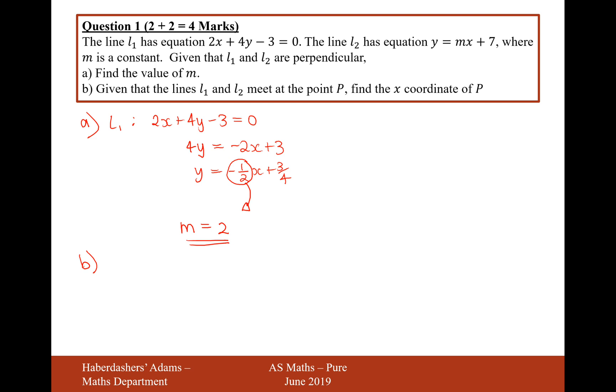Part b: Given that L1 and L2 meet at a coordinate P, find the coordinate P. Let's carry on with our equation for line 1, which is minus 1 half x plus 3 quarters, and set the other equation equal to 2x plus 7. To find the intersection of two lines, we set the equations equal to each other. Minus 1 half x plus 3 quarters equals 2x plus 7.